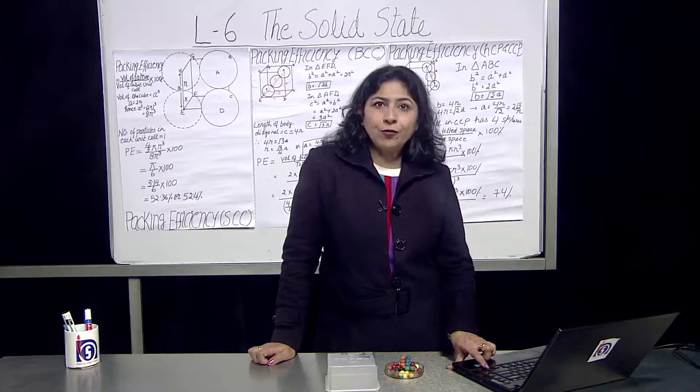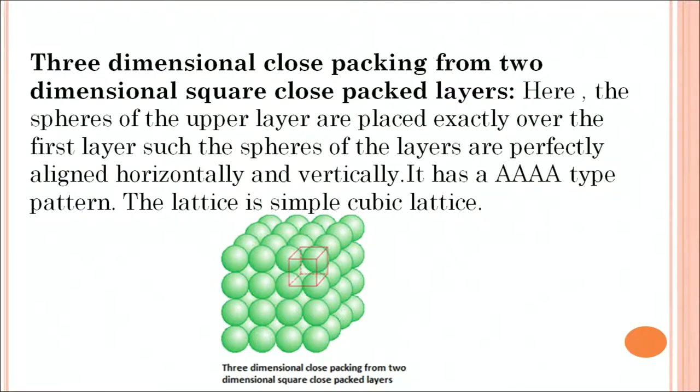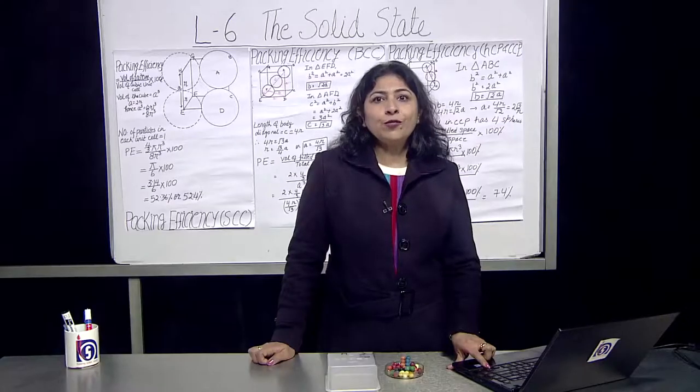For the three dimension closed pack, here the sphere of the upper layer placed exactly over the first layer. The spheres of the layers are perfectly aligned horizontally and vertically. It is AAAA type pattern and the lattice is simple cubic lattice.